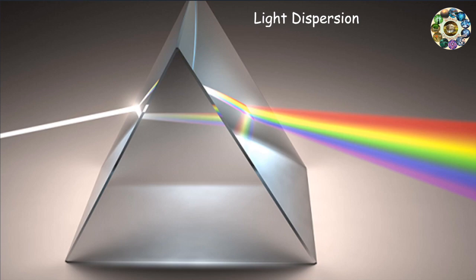As we know, the visible light, also known as white light, consists of a collection of component colors. The separation of visible light into its different colors is known as dispersion.